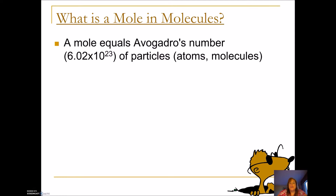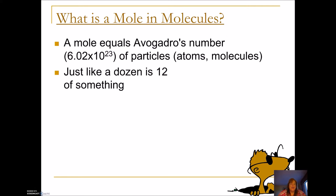So how does moles relate to molecules? Well, a mole is equal to 6.02 times 10 to the 23rd — molecules, atoms, particles, whatever you want to call them — and that's called Avogadro's number. It's a very, very large number, because molecules are teeny tiny. But it's really kind of like when we talk about a dozen. If I'm asking you to buy a dozen eggs, you'd buy 12 eggs. So a dozen is 12 of something, and a mole is 6.02 times 10 to the 23rd of that thing.